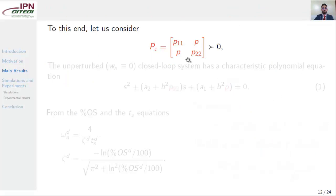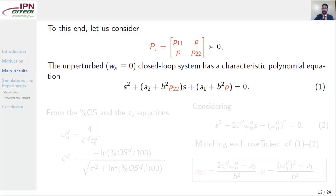To this end, let us consider p-epsilon as a square 2 by 2 matrix positive definite with entries p11, p22, and p. The unperturbed closed-loop system has a characteristic polynomial equation as shown in one. Notice here two entries of the matrix p-epsilon.